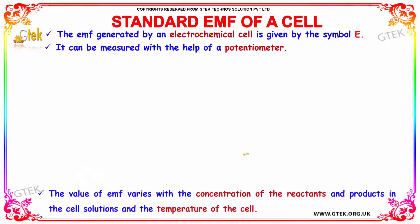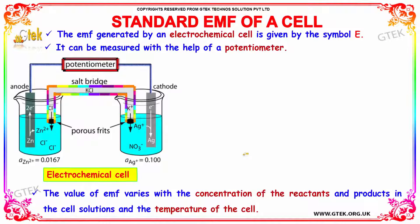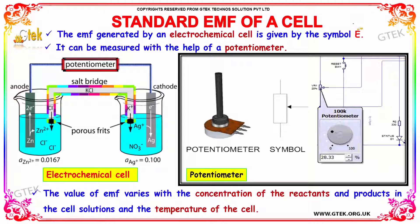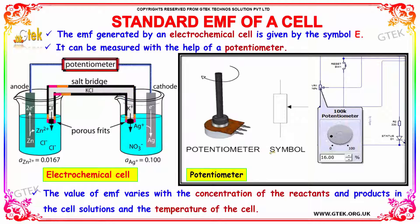The EMF generated by an electrochemical cell is given by the symbol E. It can be measured with the help of a potentiometer. You can see here how the potentiometer will be.